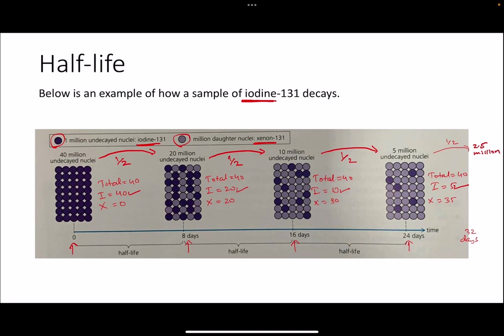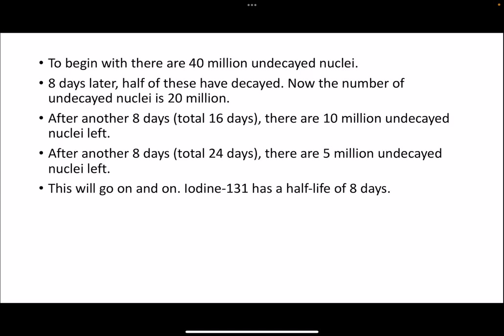If they ask what is happening to the total mass or the total number of nuclei in the sample, that has not changed. The original undecayed nucleus in the sample becomes half after every half-life — you just keep dividing it by two for every half-life. The daughter nuclei — in this case xenon — increase, but do not double.